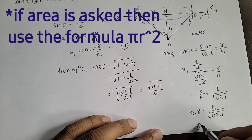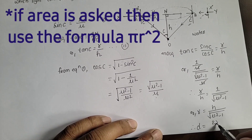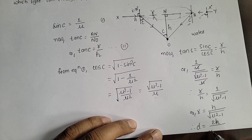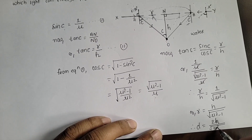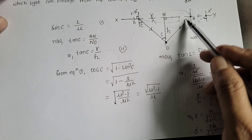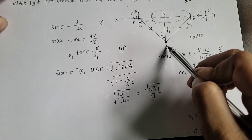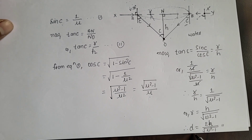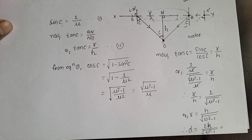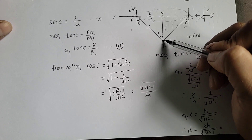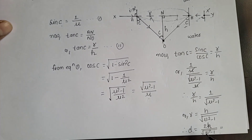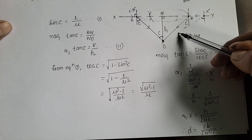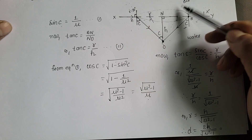Therefore the diameter D = 2r = 2h / √(μ² − 1). This is the diameter of the circle on the water surface through which light rays can emerge, where h is the depth of the point from the water surface and μ is the refractive index of the denser medium with respect to the rarer medium.